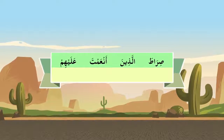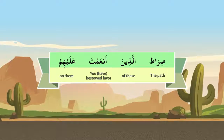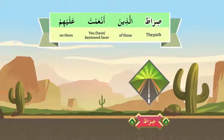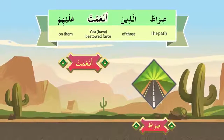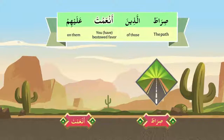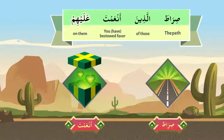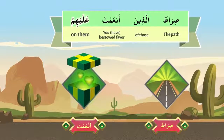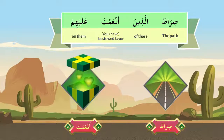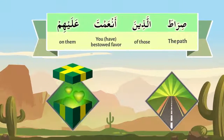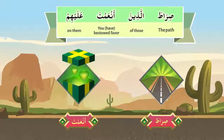صراط اللذين أنعمت عليهم — 'The path of those you have bestowed favors on them.' صراط is path. اللذين means 'of those who.' أنعمت is from إنعم, which means favor — أنعمت means 'you have bestowed favors.' عليهم means 'on them' — على plus هم.